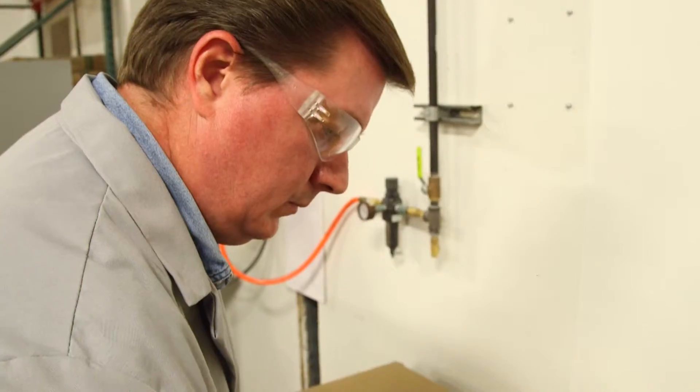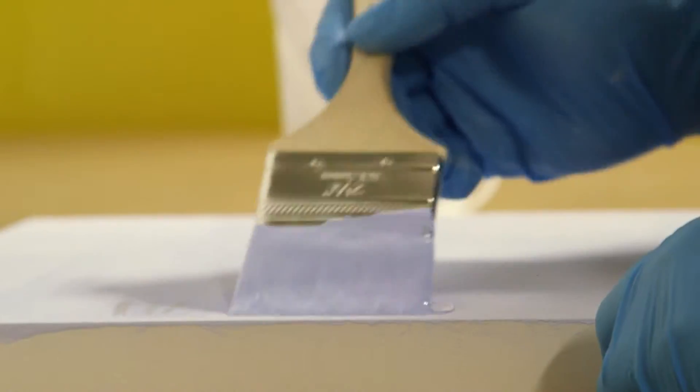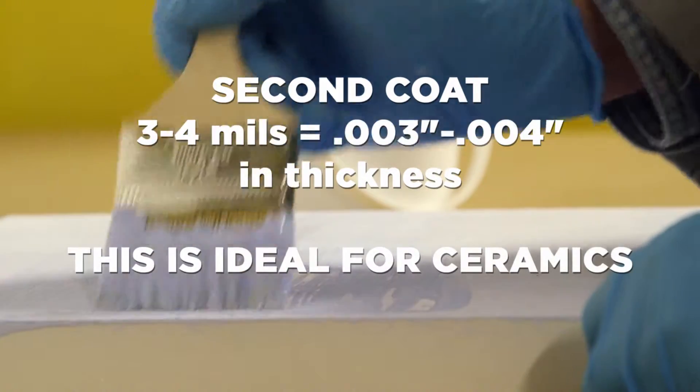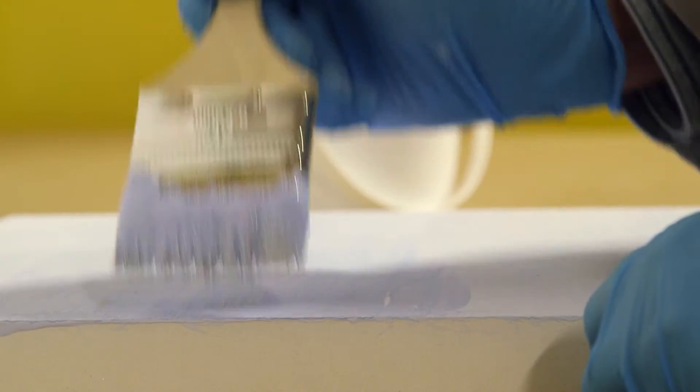The ceramic plate is given a second coating by brushing, about three to four mils thickness after drying. This is often an ideal thickness for thermal cycling.